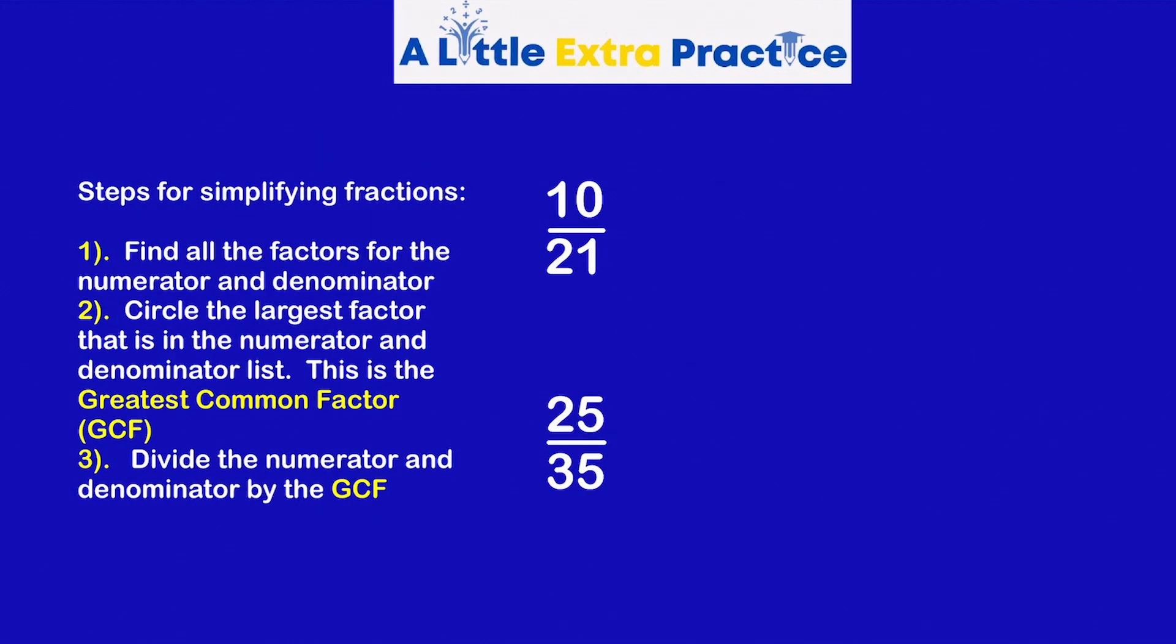Next problem: 10 out of 22. Step number one, find all factors for the numerator and denominator. One times 10, two times five. Three times, nope. Four times anything equals 10? No. And I'm at the five. Factors for 21: One times 21, two no, three yes, three times seven. Step number two: Circle the largest factor that is in the numerator and denominator list. This is called the greatest common factor.